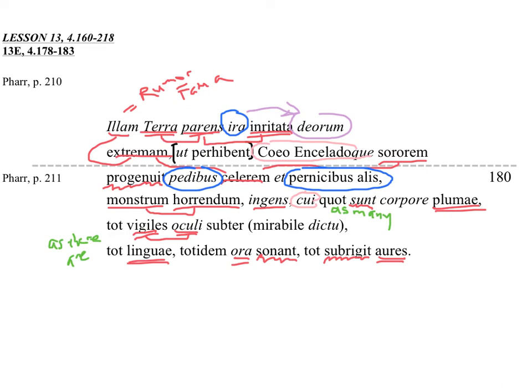Wow, this is quite the monstrum horrendum. So imagine it's this bird, huge bird, with for each feather on her body there are several things: there's an eye, one eye per feather, underneath. There's also a tongue for each feather. There's also a mouth, and there's also an ear.